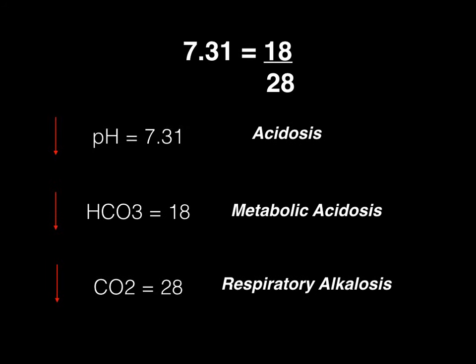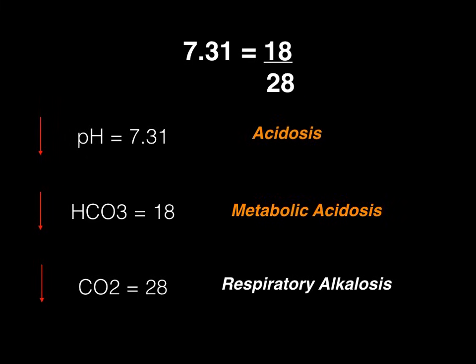Now let's look at the denominator. Carbon dioxide is 28, which is decreased from the normal value of 40. If the denominator decreases, we expect the pH to increase — anytime you decrease the denominator in a mathematical equation, the result should go up. If the pH were to theoretically increase, that would be an alkalosis. It's respiratory because it's carbon dioxide. So now we've named all three deviations. We then decide what is our primary deficit by looking at the pH — it's an acidosis — and matching that to whichever of the numerator or denominator is also an acidosis. The only acidosis here is our metabolic acidosis, so that matches the pH acidosis, and the primary deficit is the metabolic acidosis.